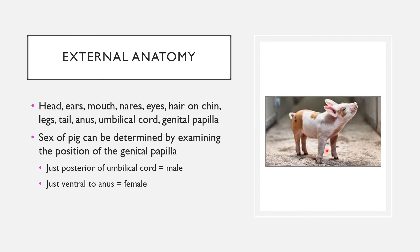You can use the genital papillae to determine the sex of your pig. If you're looking at a male fetal pig, that genital papillae will be just posterior to the umbilical cord — posterior meaning behind. If you have a female pig, you'll have that genital papillae just ventral to the anus.